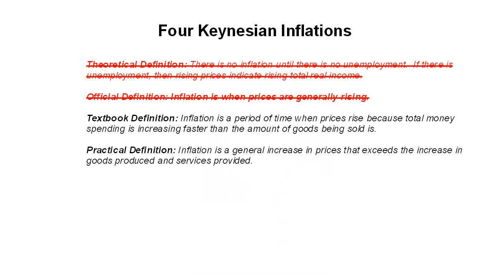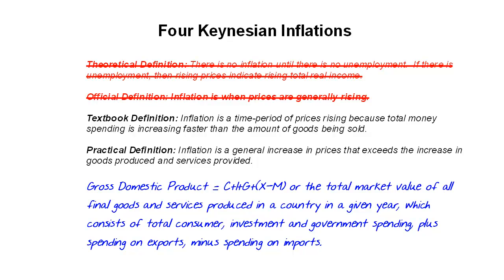That still leaves two more definitions. We've got Samuelson's textbook definition, which I've simplified as: inflation is a period of time when prices rise because total money spending is increasing faster than the amount of goods being sold. The practical definition — if you talk to someone who's reasonably economically astute — is that inflation is a general increase in prices that exceeds the increase in goods produced and services provided. Those two definitions are not precisely the same, but they're close enough that we can address them using exactly the same technique. How do we measure goods produced and services provided, or total money spending in the economy? It's the same measure — gross domestic product, GDP.